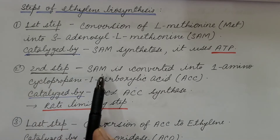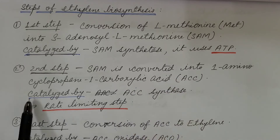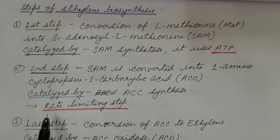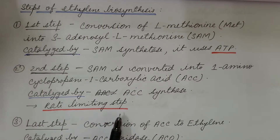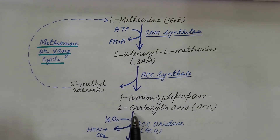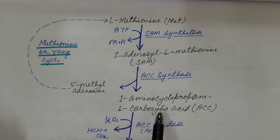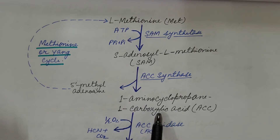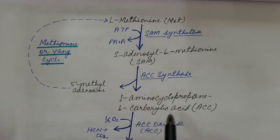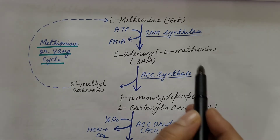The second step: SAM is converted into 1-aminocyclopropane-1-carboxylic acid (ACC), catalyzed by ACC synthase. This is the rate-limiting step — the rate of ethylene biosynthesis is determined by this conversion of S-adenosyl L-methionine into ACC.